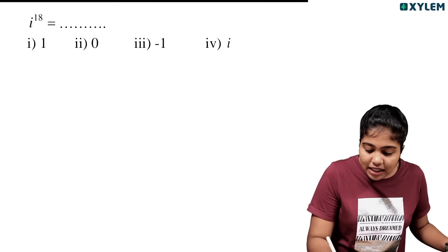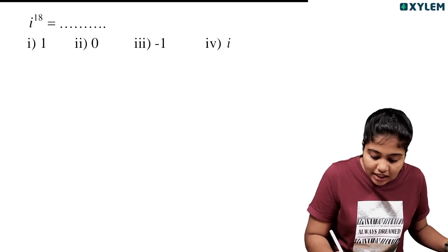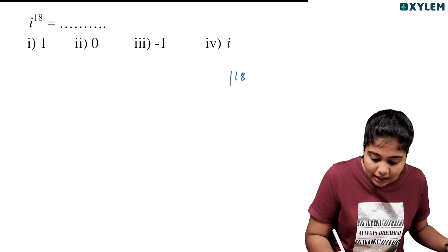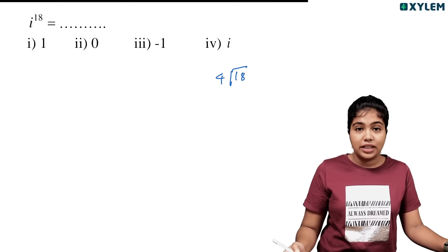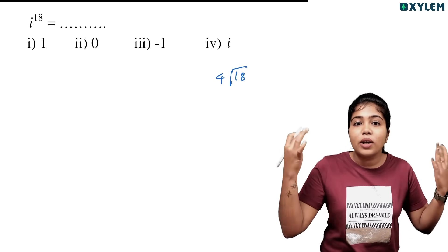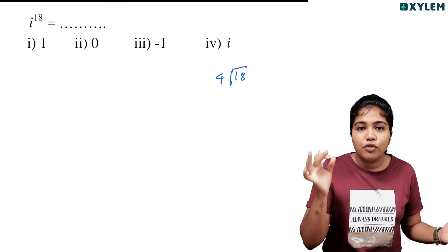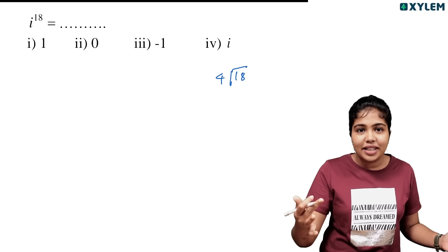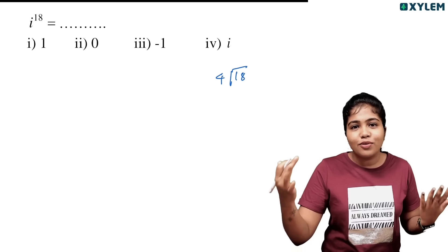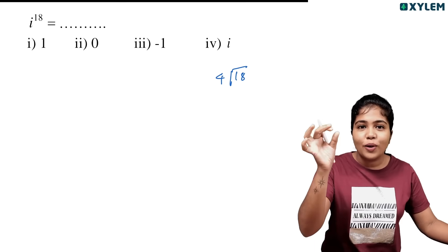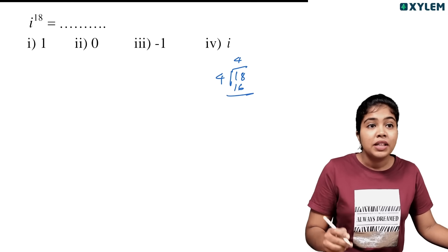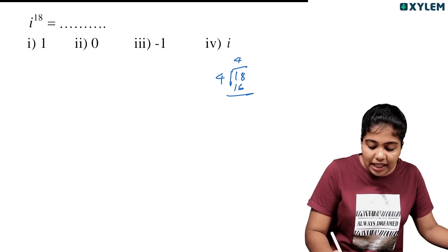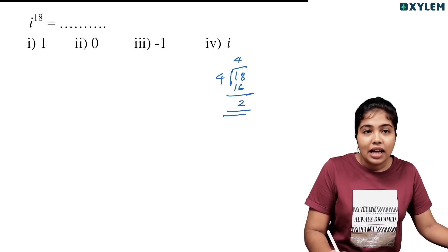What is 18? What do you do? Divide 18 by 4. How many times does 4 go into 18? 4 times 4 is 16. 4 times 5 is 20. So 4 goes into 18 four times, giving 16.